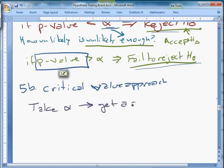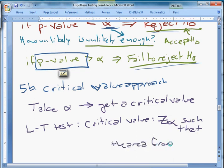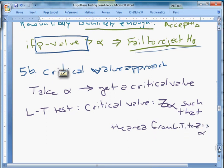Critical value approach. And it's another way to do the same thing, ultimately. It's another way to take our test statistic and do something with it. So what we do with the critical value approach is that we take our level of significance first. This is much more like what we did with confidence intervals. So, take alpha and use this to come up with the critical value. Get a critical value. How do we do that? Well, this depends on our test. So we have a left-tailed test. Then our critical value is the Z sub alpha such that the area from the left tail to Z is alpha.